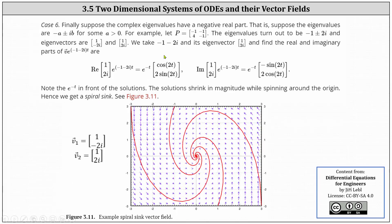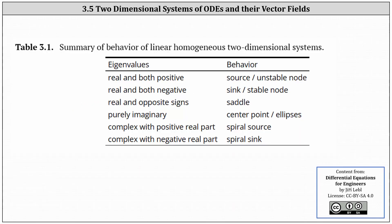And finally, for the last case, case six, we have complex eigenvalues with a negative real part. That is, suppose the eigenvalues are -a plus or minus iB for some a greater than zero. For example, if we have the two by two matrix with entries -1, -1, 4, -1, the eigenvalues turn out to be -1 plus or minus 2i, and the eigenvectors are (1, -2i) and (1, 2i). We take -1 - 2i and its eigenvector (1, 2i), and find the real and imaginary parts of V times e raised to the power of (-1 - 2i)T, which are shown below. Notice we have e to the power of -T in front of the solutions. The solutions shrink in magnitude while spinning around the origin. Hence, we get what's called a spiral sink. Here is a summary of the behavior of linear homogeneous two-dimensional systems. I hope you found this helpful.